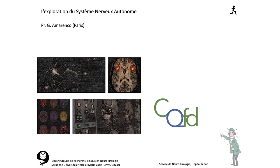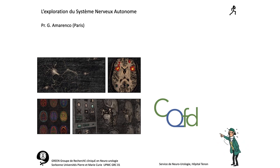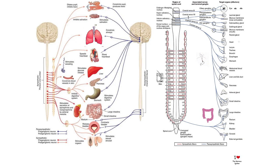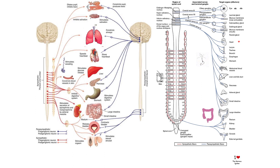Bonjour, professeur Amarinco. On va aborder dans ce cours les explorations du système nerveux autonome, système nerveux végétatif. Ce système nerveux a une importance capitale dans la régulation de l'équilibre vésico-sphinctérien et son dysfonctionnement peut entraîner un certain nombre de désordres, à la fois sur le plan de la phase de remplissage avec une hyperactivité de vessie et donc parfois des fuites, et à la fois sur la phase de vidange, avec des dysuries ou des rétentions.